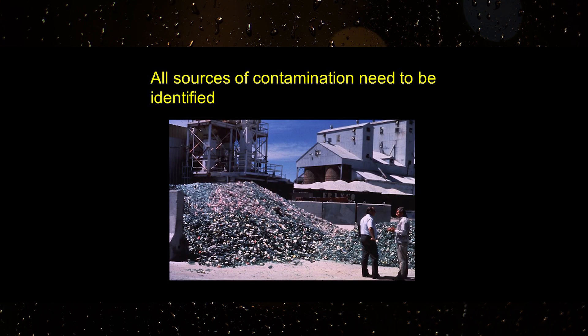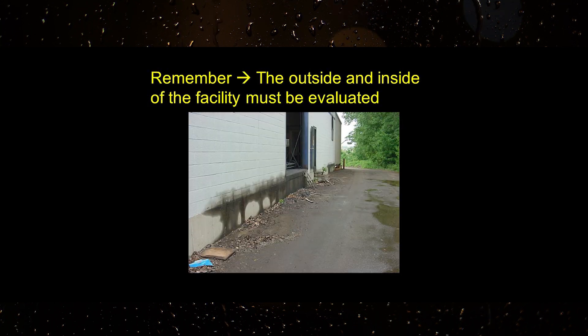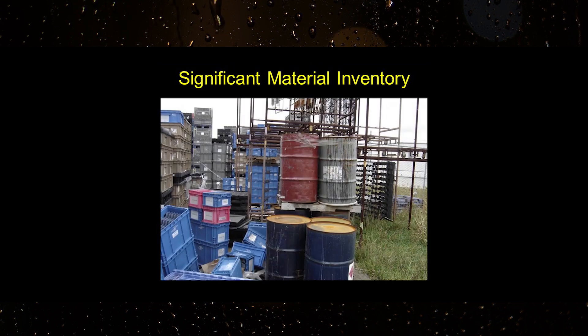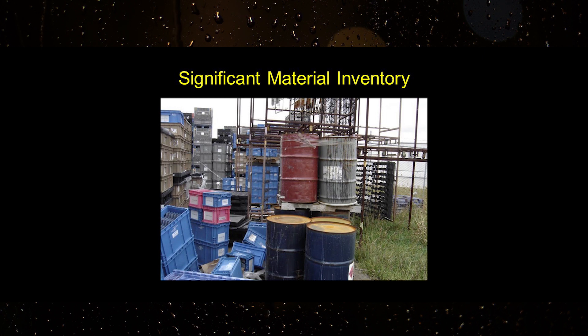While developing the stormwater pollution prevention plan, all sources of potential stormwater contamination need to be identified. The outside and inside of the facility must be evaluated to determine the materials and practices that could be sources of contamination to stormwater runoff. Often significant materials get tracked outside and exposed to stormwater runoff by vehicles or employees. For each significant material identified, the stormwater pollution prevention plan shall describe the ways in which the significant material is or has the reasonable potential to become exposed to stormwater runoff.